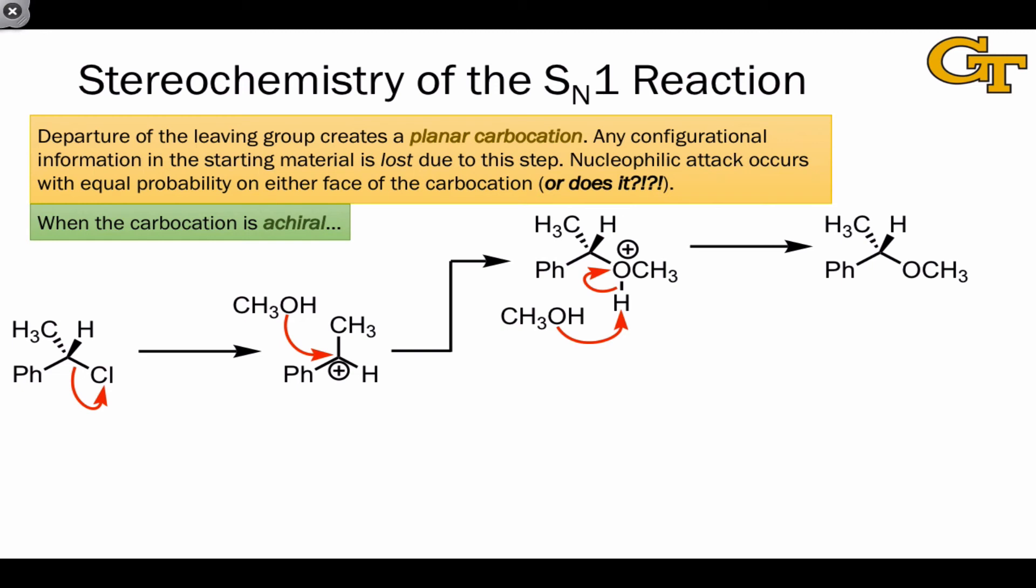However, if methanol approaches the opposite side of the carbocation, the top side, we end up with the product shown at the bottom right. Notice that the hydrogen and the CH3 have switched places. These two products are enantiomers.